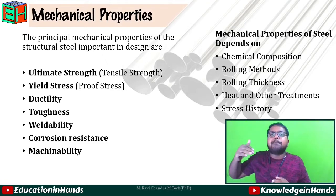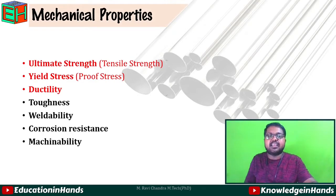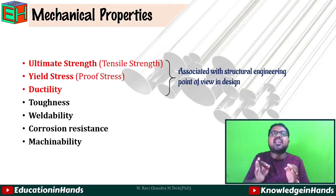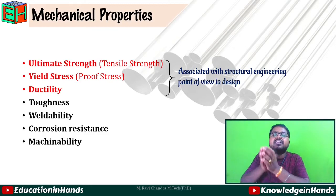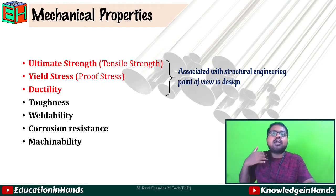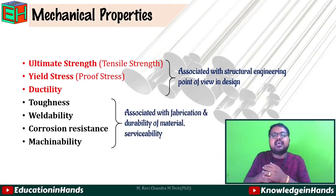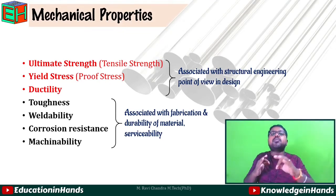From ultimate strength to machinability, these mechanical properties are divided into two categories. The first category — ultimate strength, yield stress, and ductility — are associated with the structural engineering point of view for design, meaning they relate to the strength of the structure. The second category — toughness, weldability, corrosion resistance, and machinability — are associated with fabrication and durability, which is nothing but the serviceability of the material.